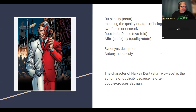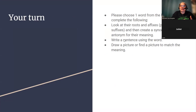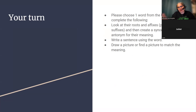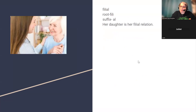So that's how you do this activity, and I'm excited to see what you came up with. Your job is to choose one word from the list and complete the following: look at the roots and affixes — prefixes and suffixes — create a synonym and antonym for their meaning, write a sentence, and draw or find a picture to match. What did you come up with? Could you tell me about your word?